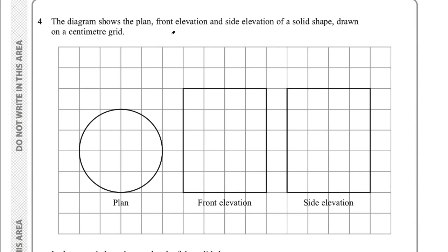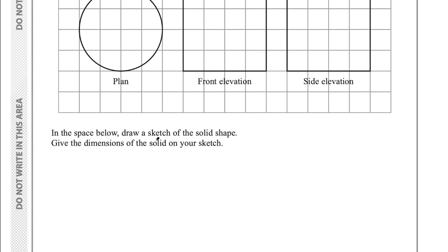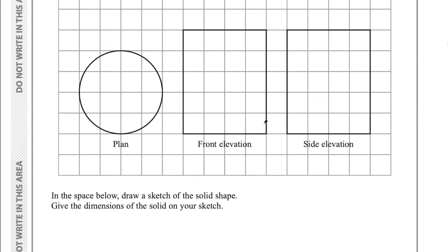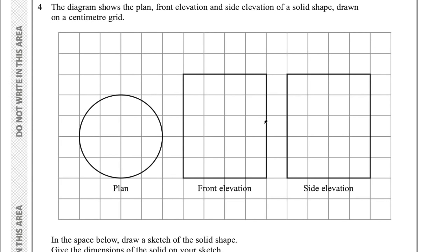Question 4 says the diagram shows the plan, front elevation and side elevation of a solid shape drawn on a centimetre grid. We have a circle as the plan view, and the front and side elevations are both rectangles. In the space below, draw a sketch of the solid shape and give its dimensions. It is important to be able to sketch 3D shapes in mathematics — it helps with problem solving, and you need to be able to read a plan and imagine it in three dimensions.